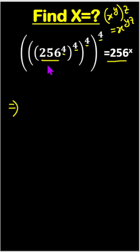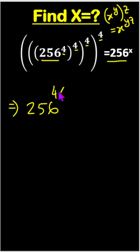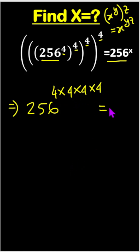Therefore, here 256 and each 4 are powers. Therefore, we can write 4 times 4 times 4 times 4 equals 256 to the power x.